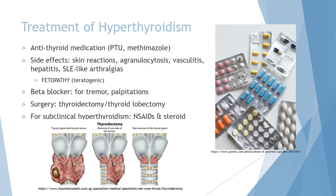The treatment of hyperthyroidism depends on the cause. Antithyroid medications like PTU and methimazole suppress the production of thyroxine. This is the mainstay of treatment for disorders involving unregulated production of thyroxine, but not for hyperthyroidism from conditions like thyroiditis, where the problem is not production of the hormone but its storage. The inflammation of the gland causes poor storage and leakage of thyroid hormone. Because it resolves spontaneously, it doesn't need active treatment but instead needs pain management and steroids to reduce inflammation.